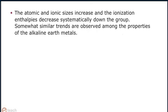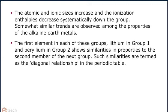The atomic and ionic size increase and the ionization enthalpies decrease systematically down the group. Somewhat similar trends are observed among the properties of alkaline earth metals. The first element in each of these groups — lithium in group 1 and beryllium in group 2 — shows similarities in properties to the second member of the next group. Such similarities are termed as the diagonal relationship in the periodic table.